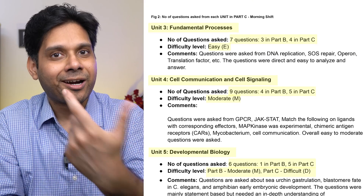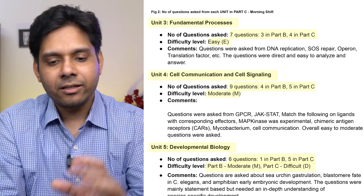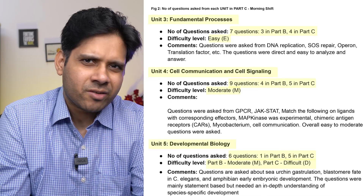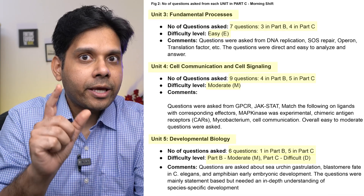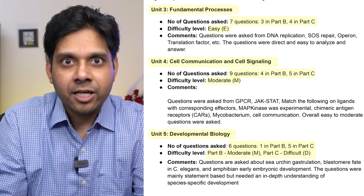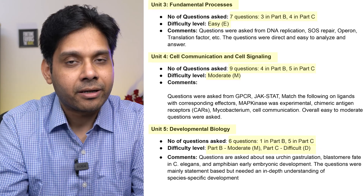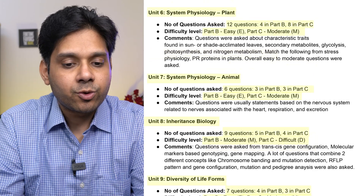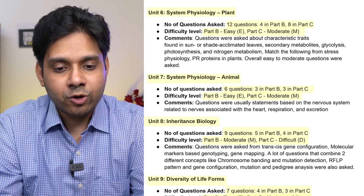Unit 5, Developmental Biology, had six questions: one in Part B and five in Part C. The single Part B question was moderate, but Part C had more difficult questions from developmental biology. You have to prepare developmental biology thoroughly.